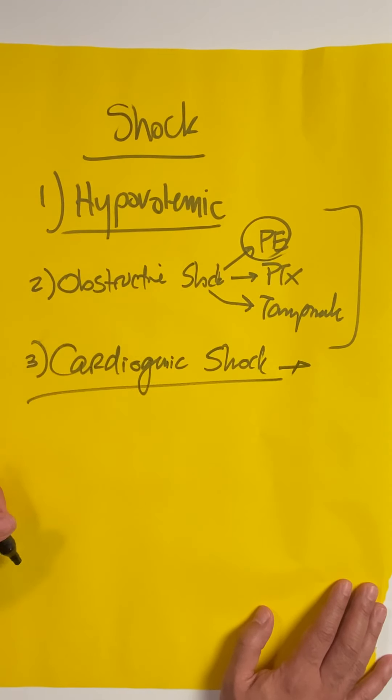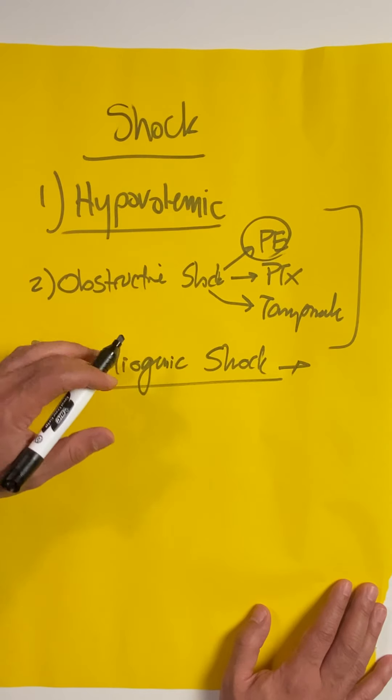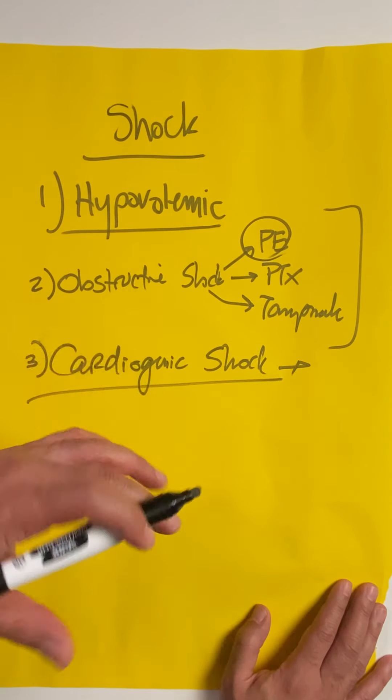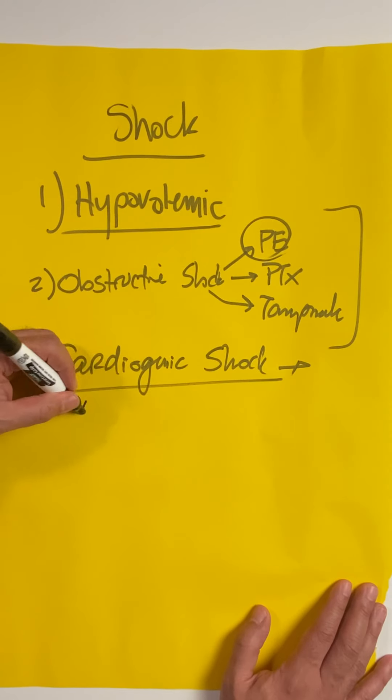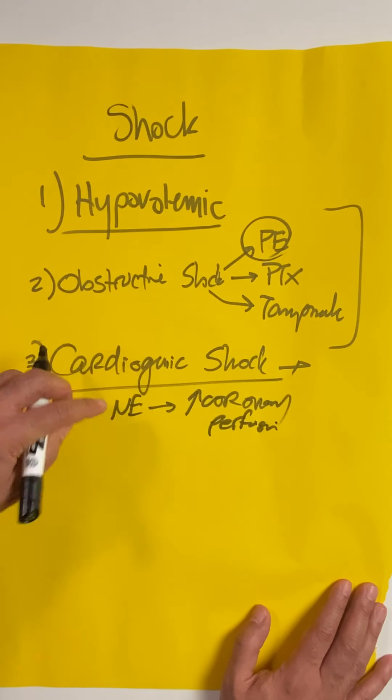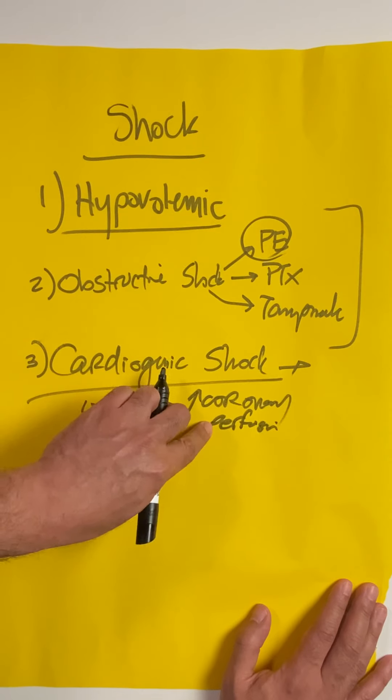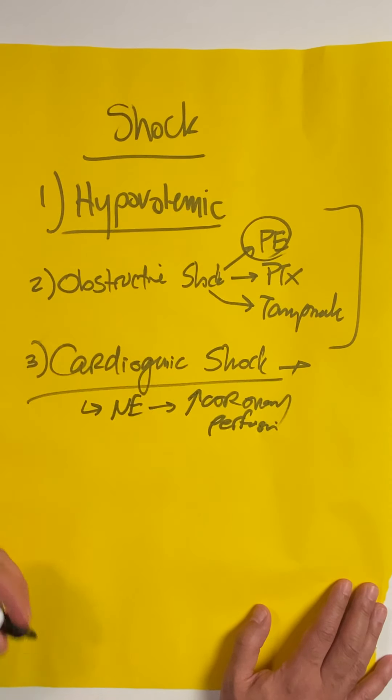For cardiogenic shock, many people say you need to use inotropes, and that is true. But if you don't increase the coronary perfusion to the sick heart, you won't be able to use inotropy to increase the work from the heart. Using norepinephrine will increase coronary perfusion to feed those sick ventricles with better blood flow, and then you can add your inotropy after that.